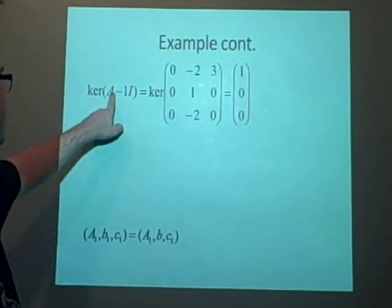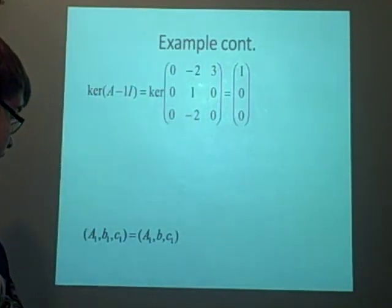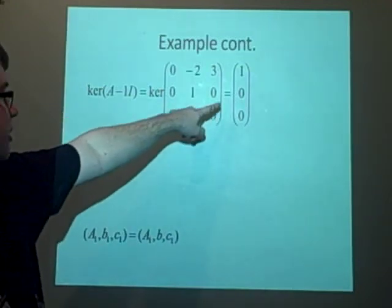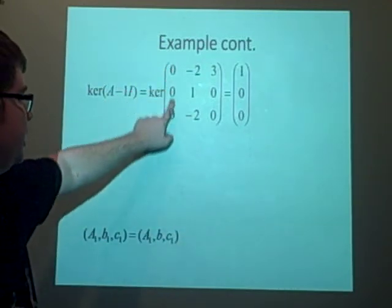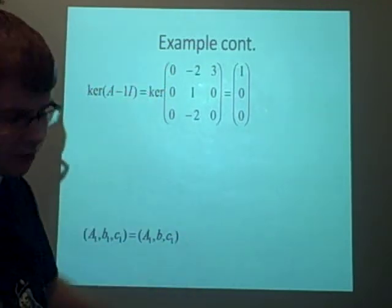Now we want to do it for the 1. So we have A-I, which is the kernel of this, and again, the same methods, it gives us the kernel here, which is 1, 0, 0, because we can see clearly that x can be whatever it wants because it's not actually involved.